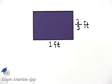Let's find the perimeter of this rectangle and then we'll find the area. First let's concentrate on perimeter and remember that perimeter means distance around.